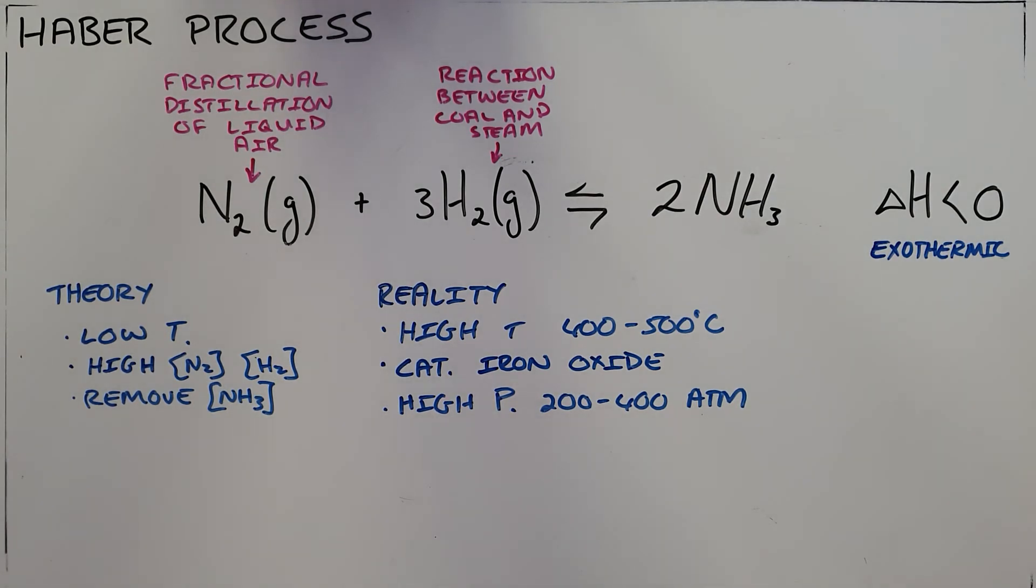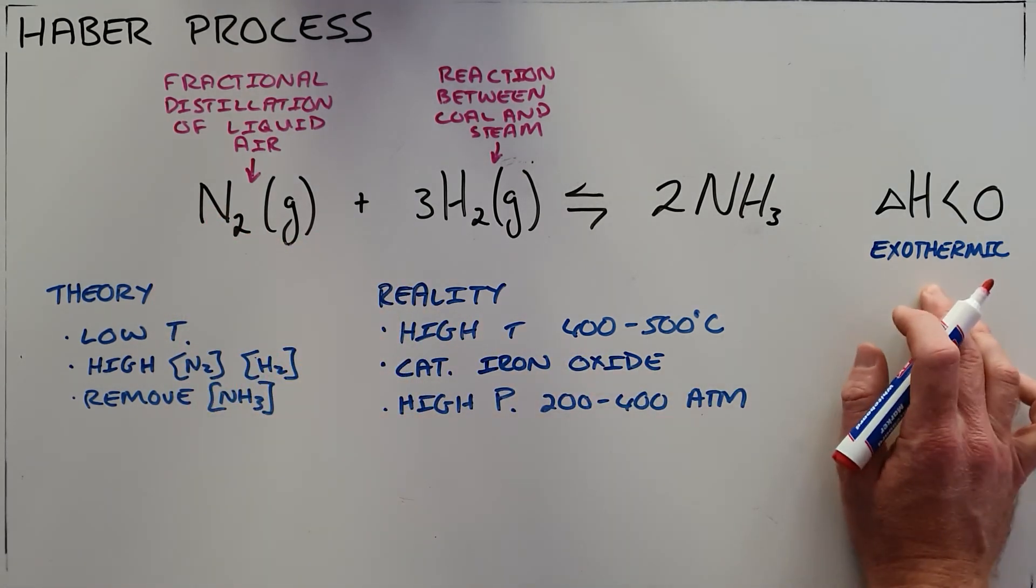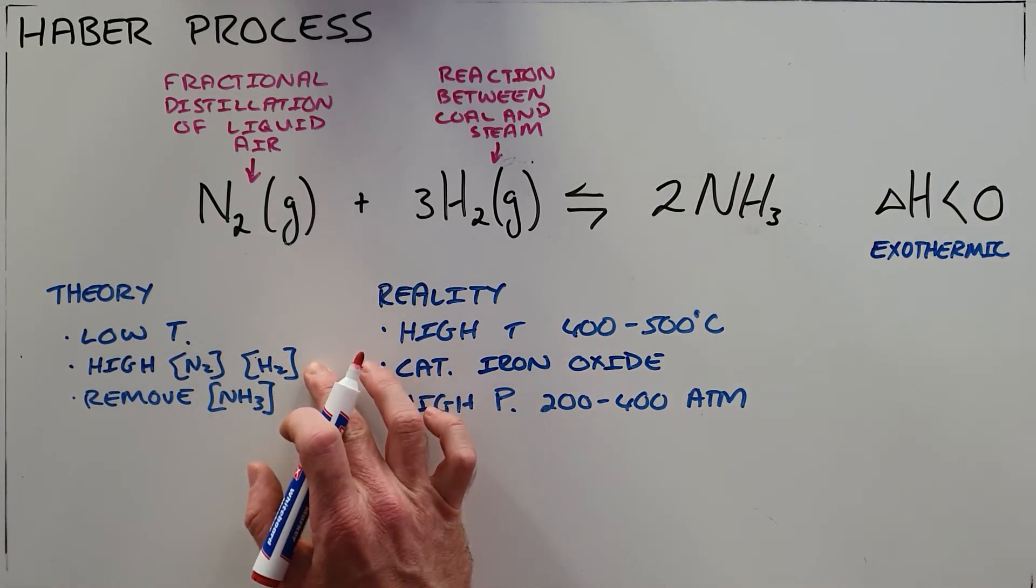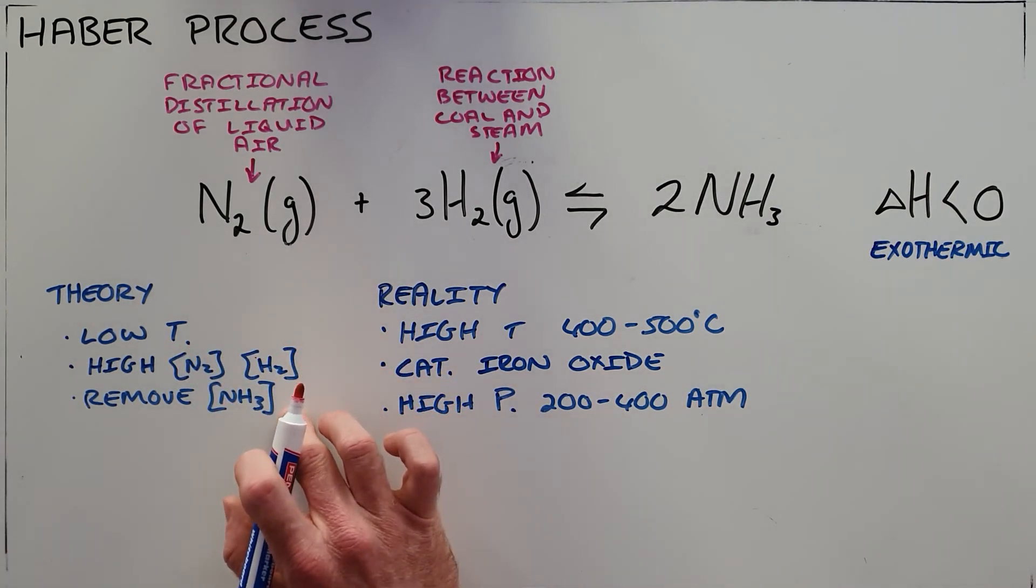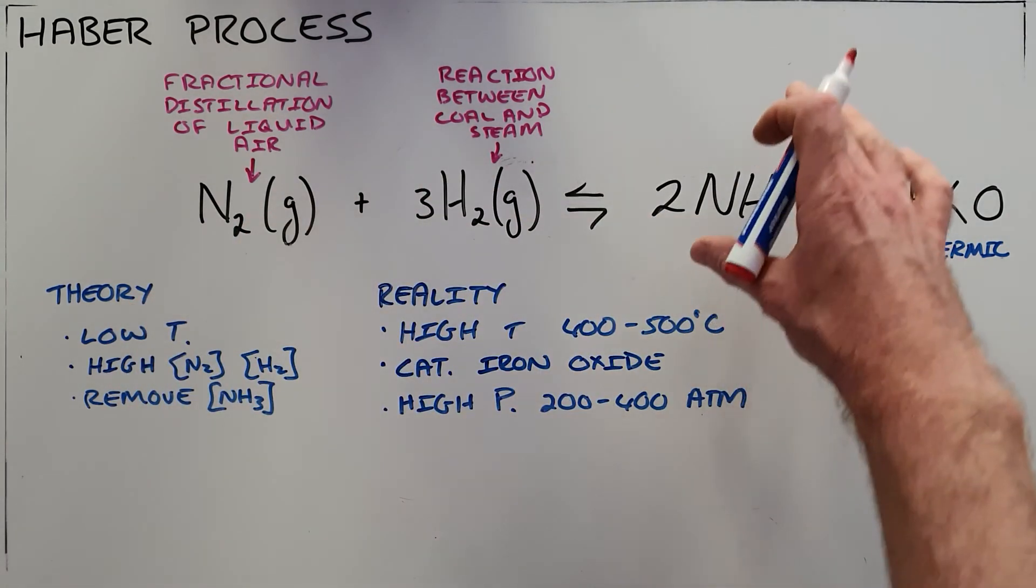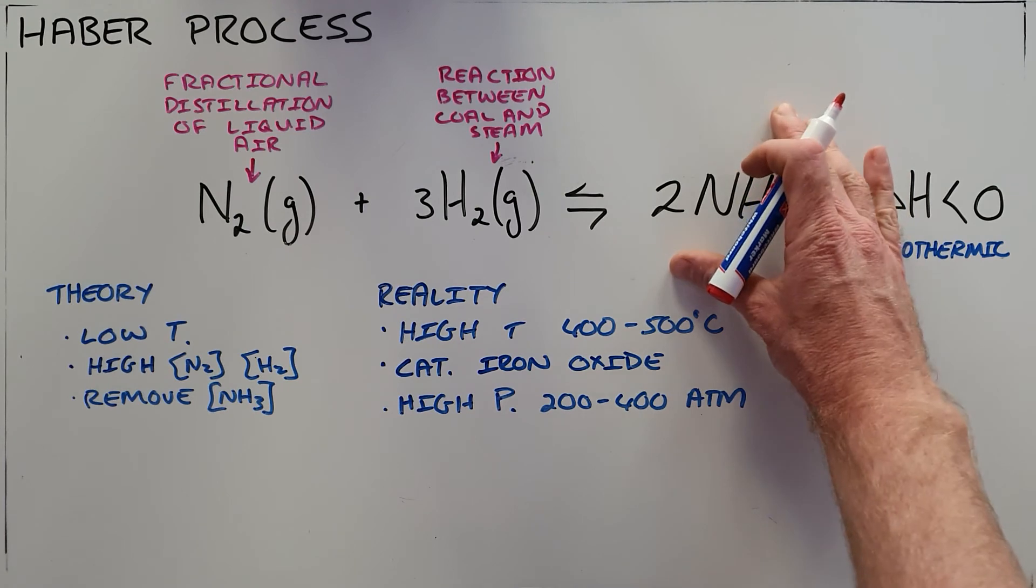Here we have a nice example of how we use Le Chatelier's principle and rates of reactions in the fertilizer industry. We have a theoretical prediction that says this is an exothermic reaction, therefore lower temperatures, higher concentration of reactants, and constantly removing products would be the best way to produce as much product as possible.